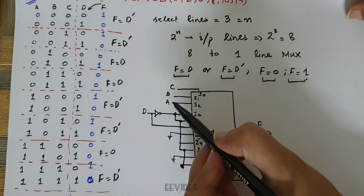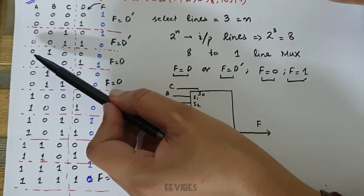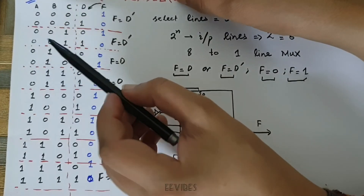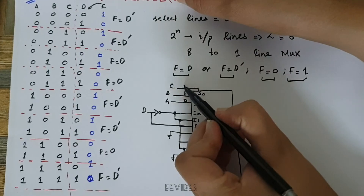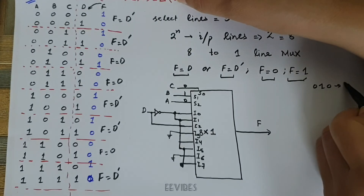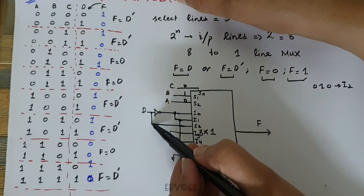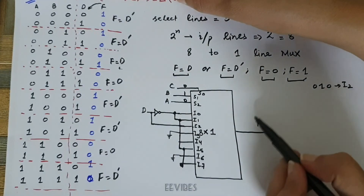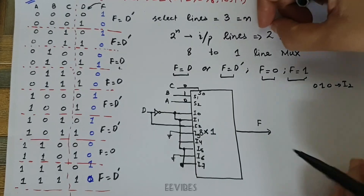To verify: if we choose A = 0, B = 1, C = 0, this corresponds to decimal 2, selecting input I2. I2 is connected to D, so D is forwarded to the output — matching what is specified in the truth table. In this way we can implement any boolean function using the multiplexer.